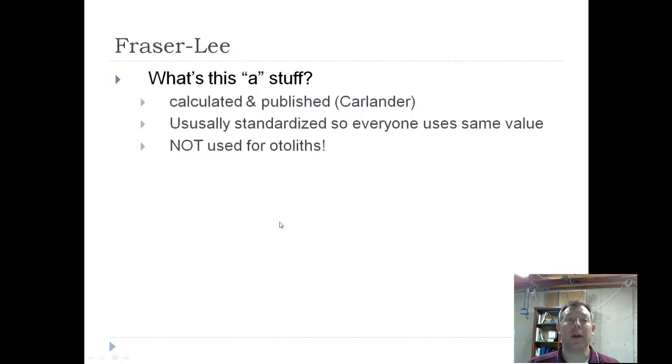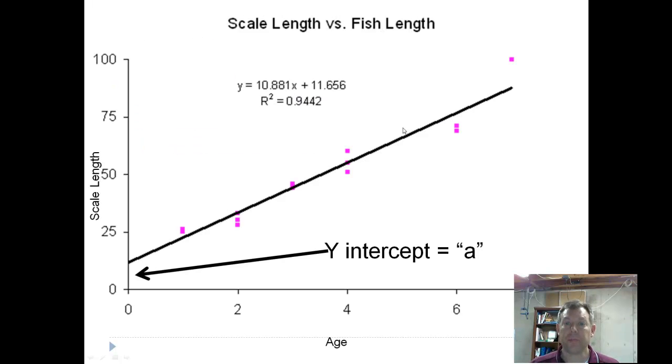So what is A, or where do I get it? It's published. Fish cartilaginous put out several volumes that contain lots of fish data, and people have used these forever for summarizing or looking at data across regions. And so based upon those data, people have calculated this value of A for different species. In general, they're standardized, so everybody uses the same value. So my back calculations can be compared to your back calculations. Again, we don't use these for otoliths or spines.